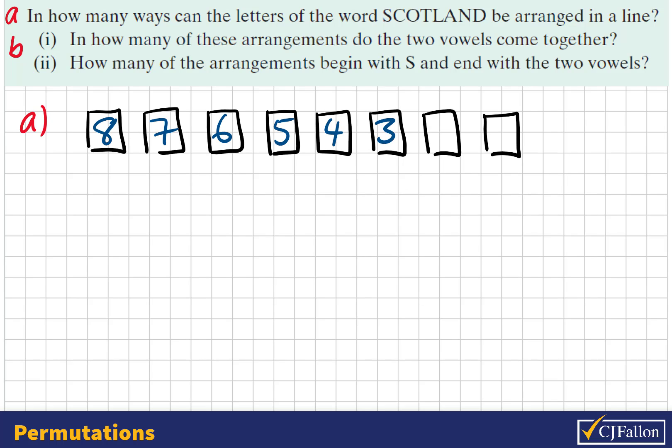5, 4, 3, 2, 1, etc. The fundamental principle of counting says we multiply our options. 8 multiplied by 7, 6, 5, 4, 3, 2, 1 is called 8 factorial.